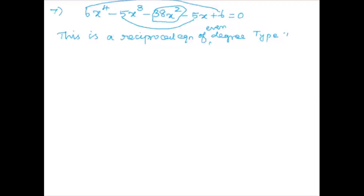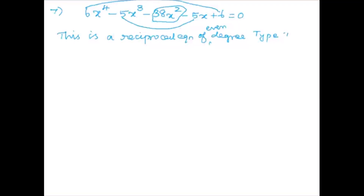We get 6(x² + 1/x²) minus 5(x + 1/x) minus 38 equals zero. Taking common: 6 times (x² + 1/x²), minus 5 times (x + 1/x), minus 38 equals zero.